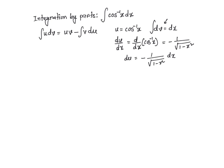That gives me du is equal to negative 1 over square root of 1 minus x squared, dx. And similarly, if we integrate both sides of dv equals dx, we get v is equal to x. Now, our integral of cosine inverse of x dx, according to these substitutions, is going to be uv minus the integral of v du.